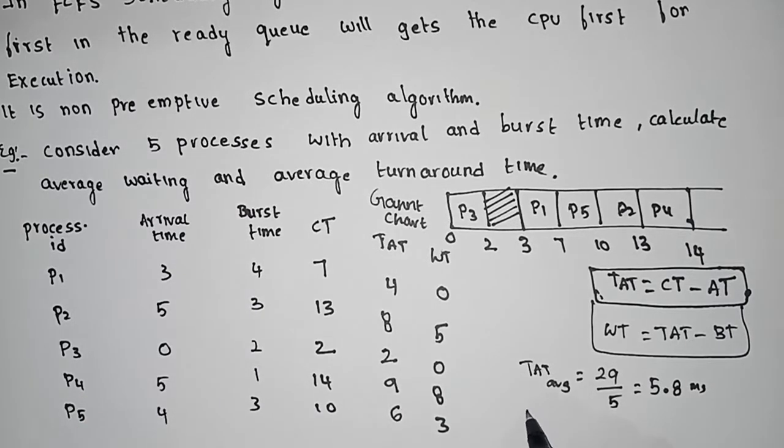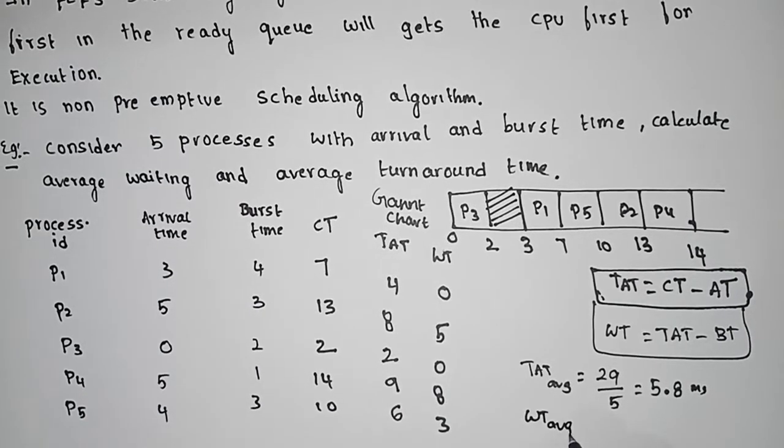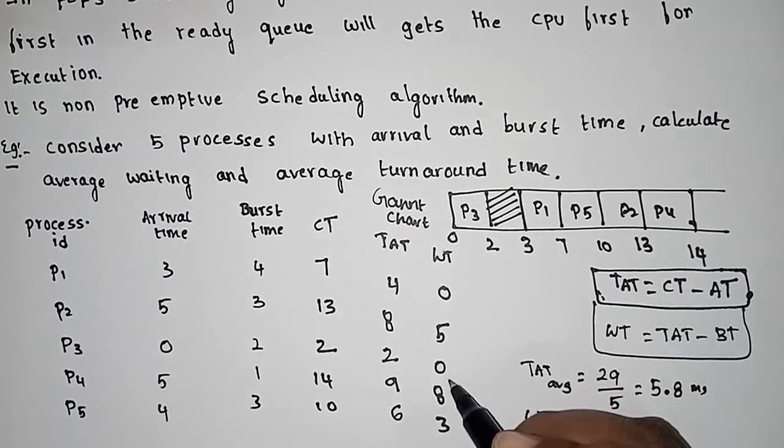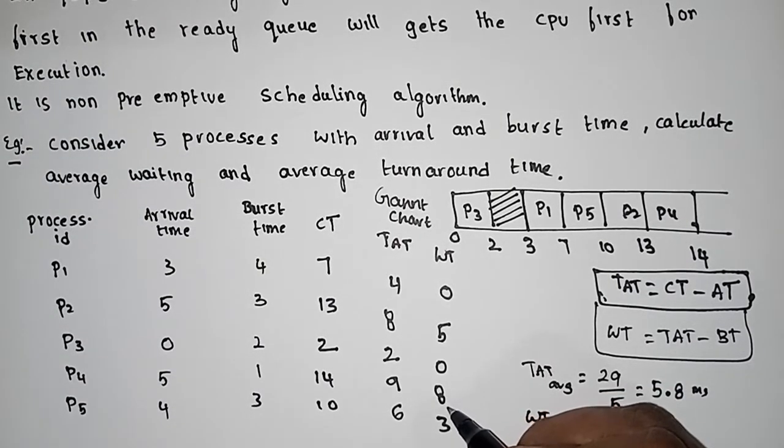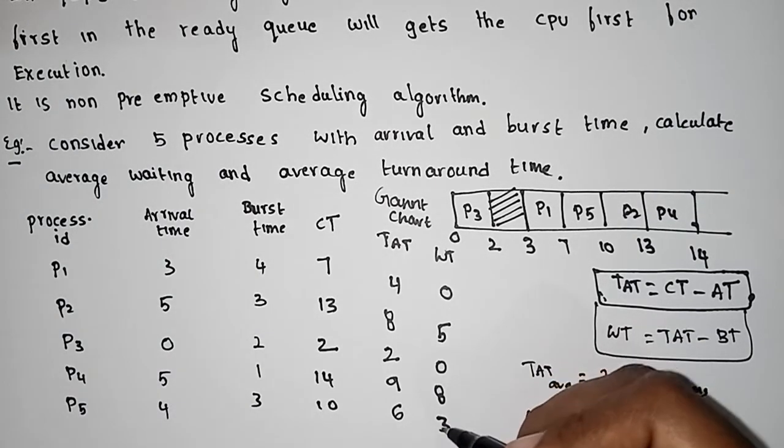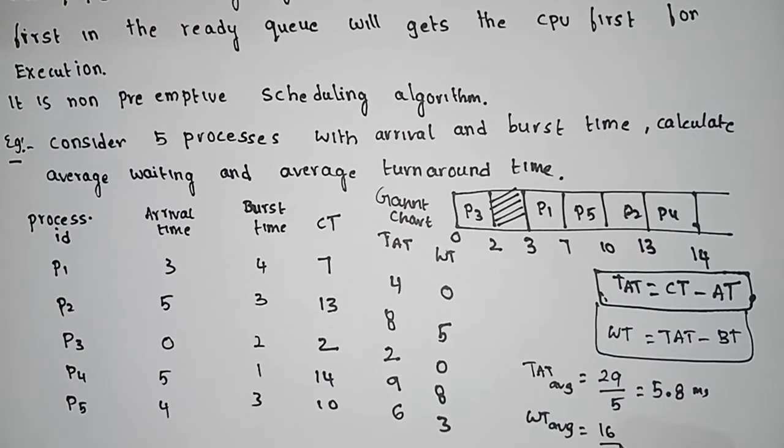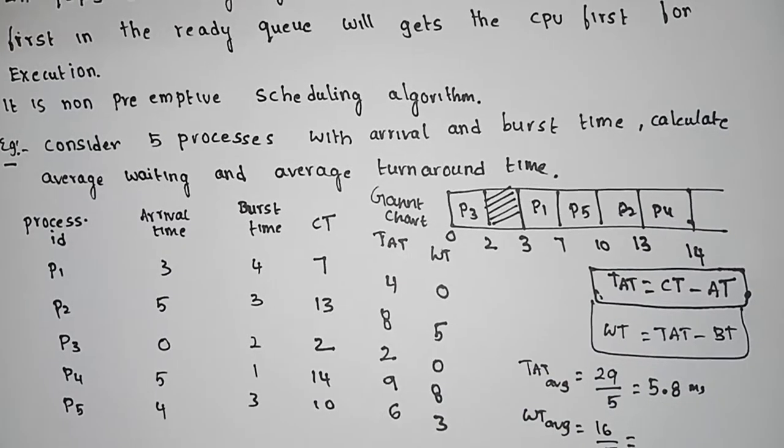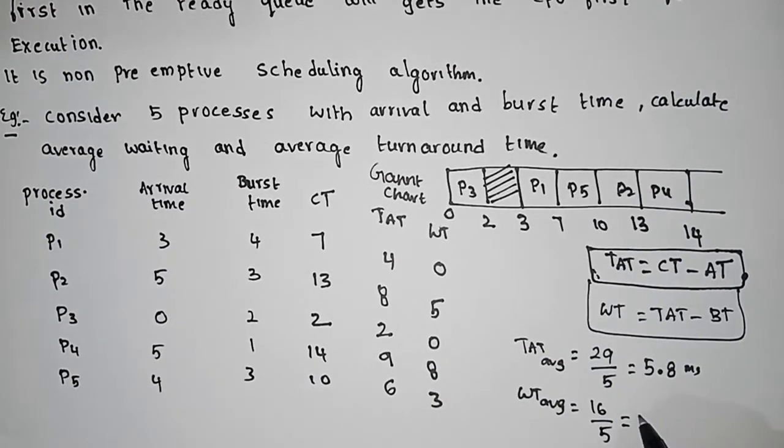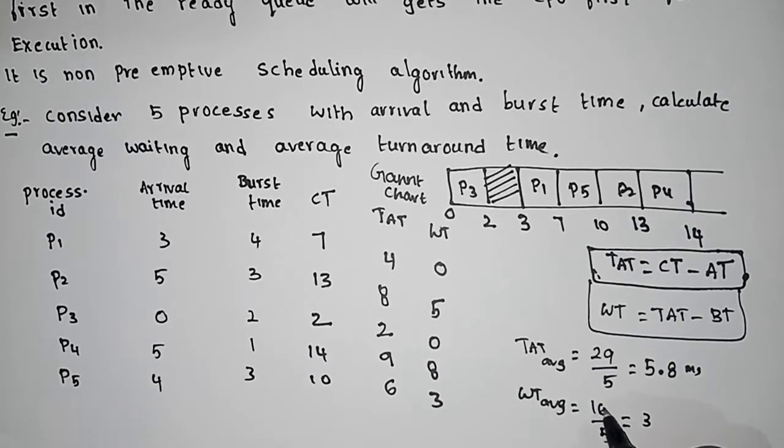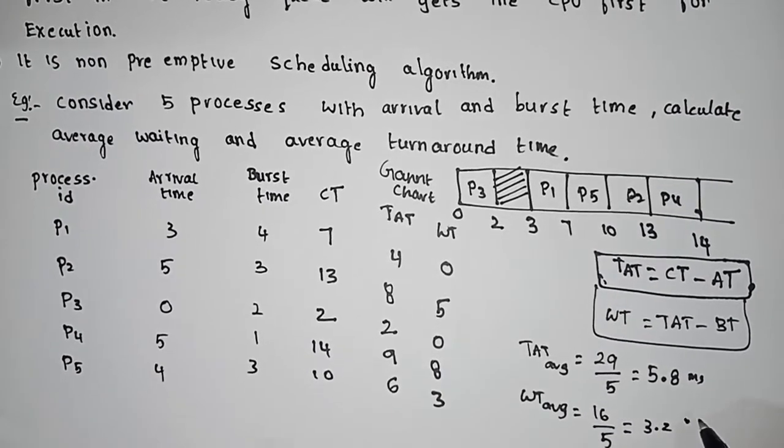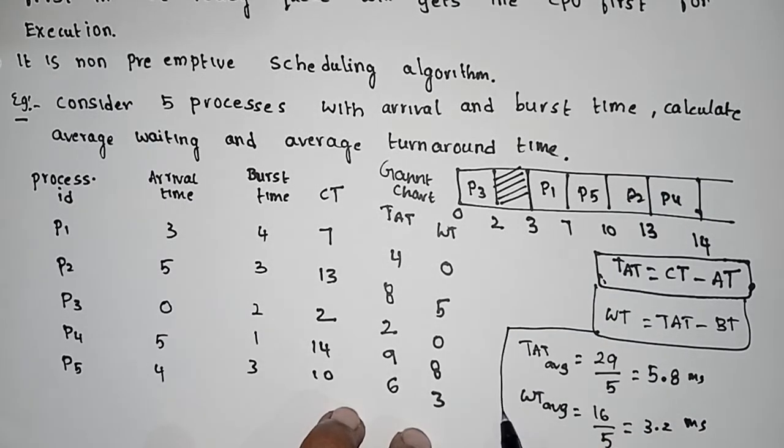Average waiting time: 0 plus 5 plus 0 plus 8 plus 3 equals 16. 16 divided by 5 equals 3.2 milliseconds. This is the average waiting time.